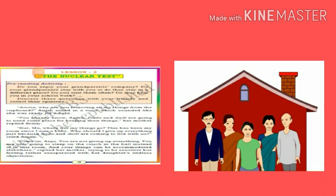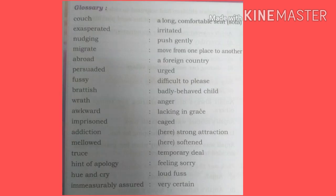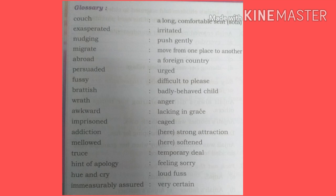Now let's go for the glossary words. Couch means a long comfortable sofa. Exasperated means irritated. Nudging means push gently. Migrate means move from one place to another. Abroad means foreign country. Persuaded means urged, insisted. Fussy means difficult to please. Precocious means badly behaved child. Wrath means anger. Awkward means lacking in grace. Imprisoned means gazed. Addiction means strong attraction. Truce means temporary deal. Hint of apology means feeling sorry. War cry means loud outburst. Immeasurably assured means very certain.